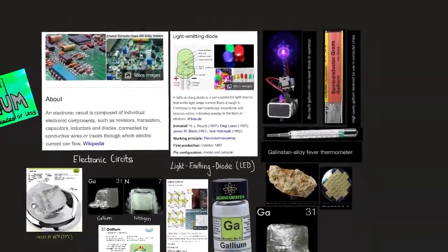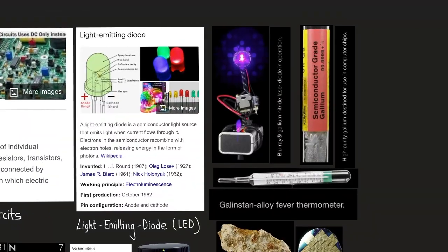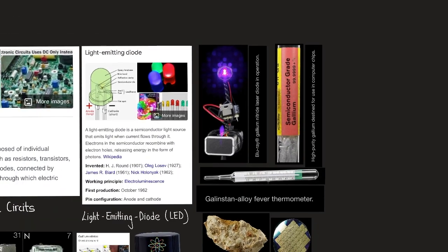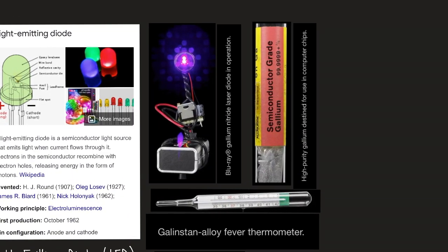So here we have electronic circuits, light-emitting diodes. It's used for Blu-rays, so whenever you play video games or watch movies, you use gallium in the lasers. So here's Blu-ray gallium nitride laser diode in operation. And here we have high-purity gallium destined for use in computer chips.